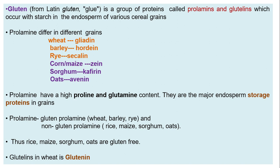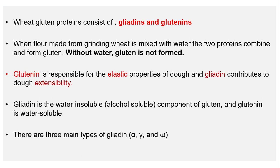Glutelins in wheat are known as glutenin. Wheat gluten proteins consist of gliadins and glutenins. When flour made from grinding wheat is mixed with water, these two proteins combine and form gluten. Without water, gluten is not formed.